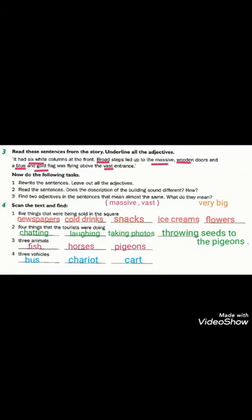Question number three. Read these sentences from the story. Underline all the adjectives. Here you have to underline the adjectives in these sentences. يجب أن نضع خط تحت الصفات الموجودة في هذه الجمل. It had six white columns at the front. Six and white are adjectives you have to underline. Broad steps led up to the massive wooden doors and a blue and gold flag was flying above the vast entrance. Here we have broad is an adjective, massive, wooden, blue, gold and vast. All of these are adjectives you have to underline.